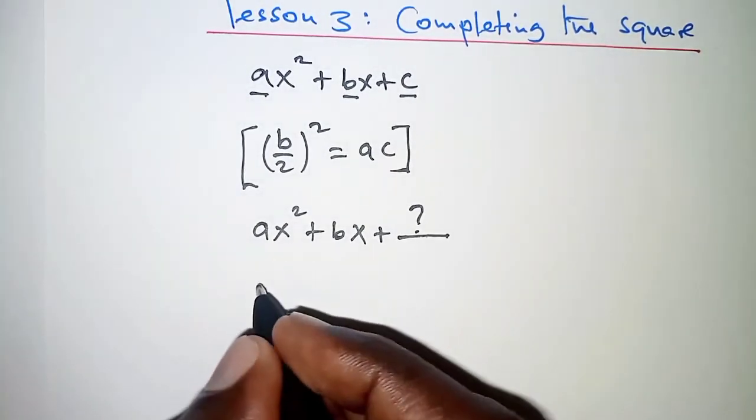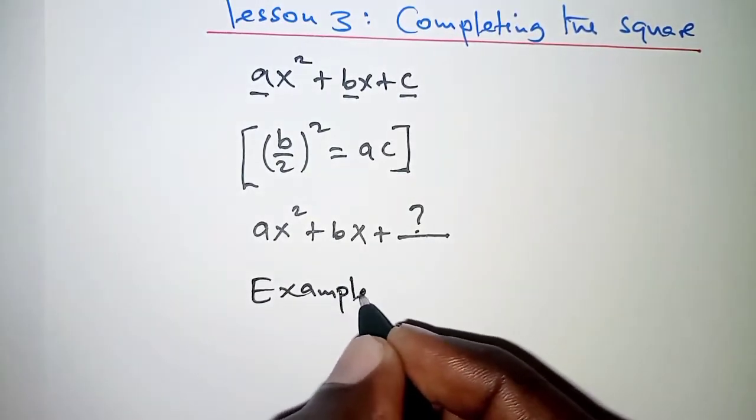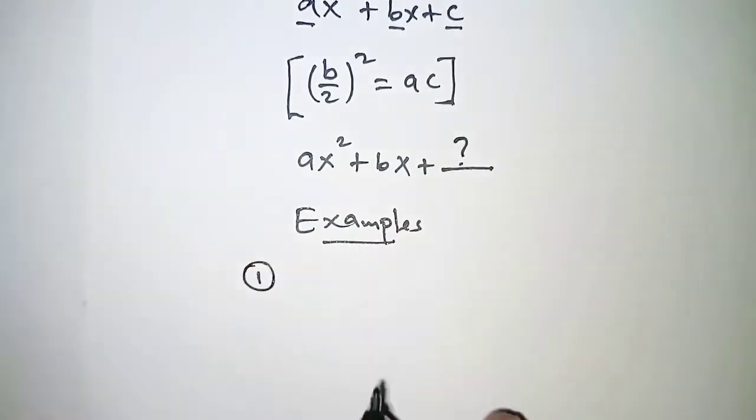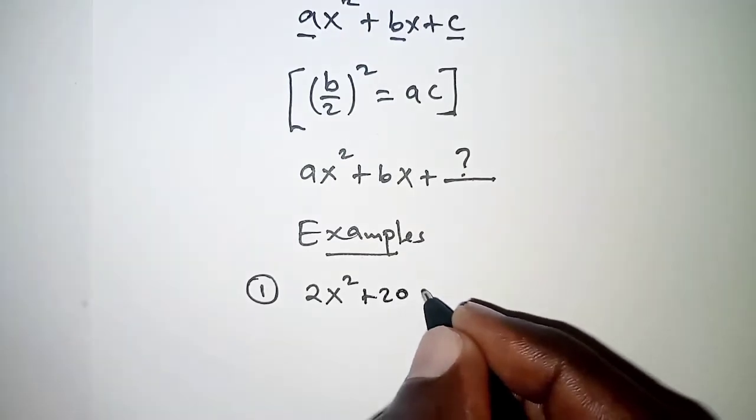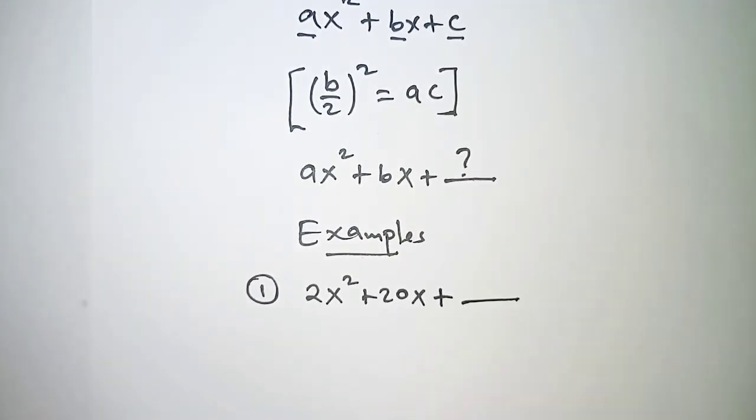I want us to look at a few examples. The first one, if you have 2x² + 20x + ? where c is missing,